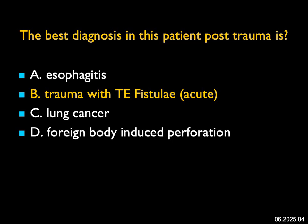This was secondary to trauma — in this case, blunt trauma. I don't see a stab wound, though you can see tracheoesophageal fistula from stab wounds as well as blunt trauma. I don't see an associated aortic dissection either.